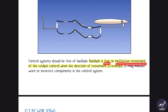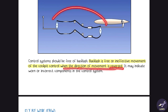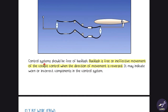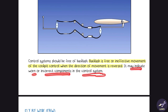The control system should be free of backlash — that is, ineffective movement of the cockpit control when the direction of movement is reversed. Backlash may indicate worn or incorrect components in the control system.